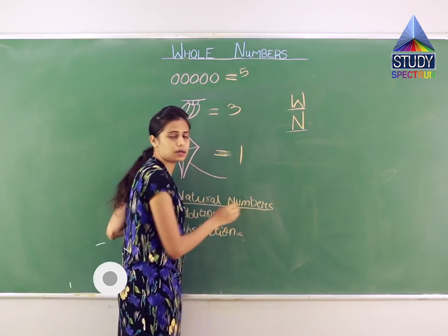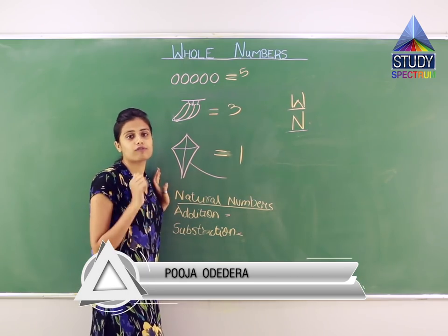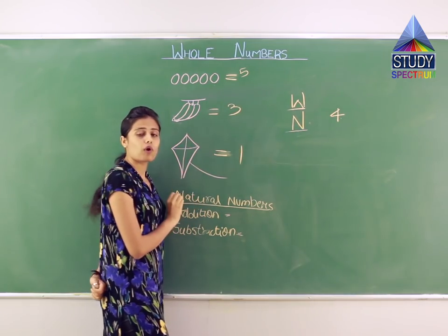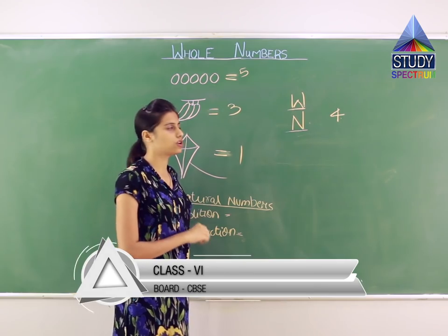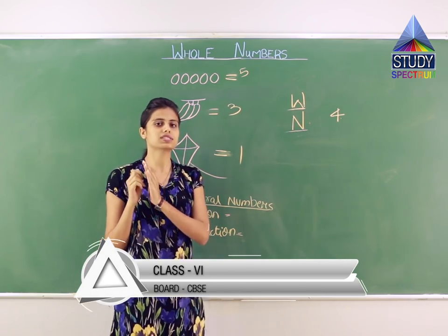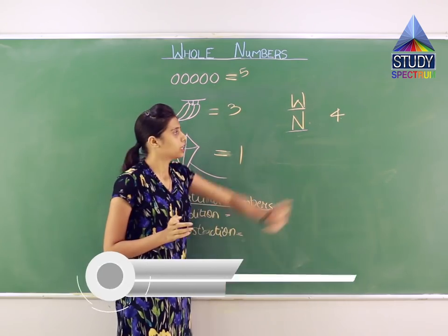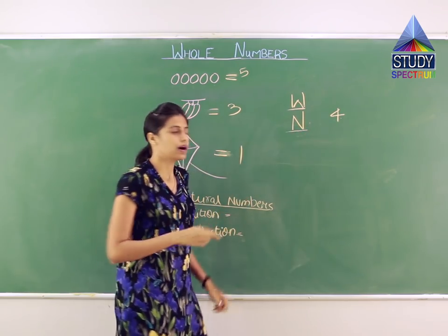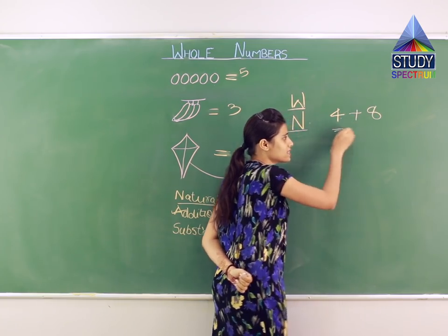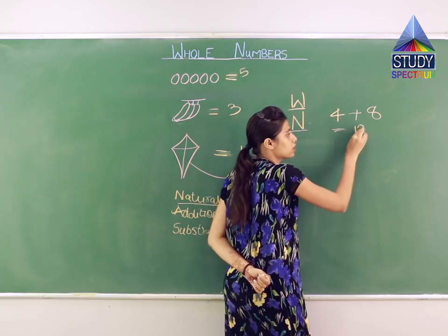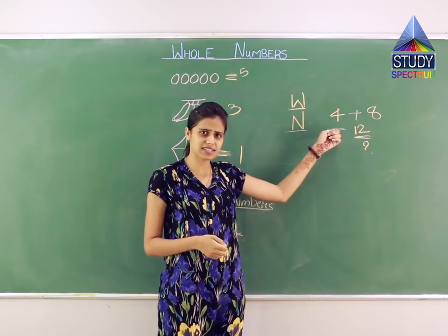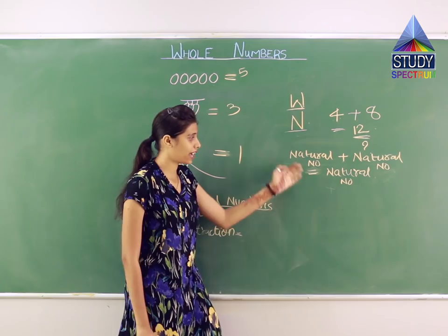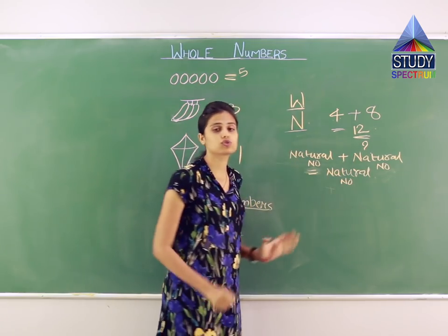Let us understand what happens when natural numbers are added or subtracted. If I take a natural number 4 and add another natural number 8, the answer is 12. Is 12 a natural number? Yes. So a natural number plus another natural number also equals a natural number.